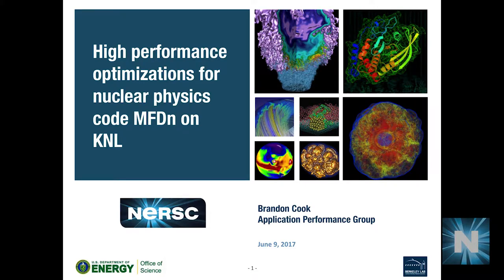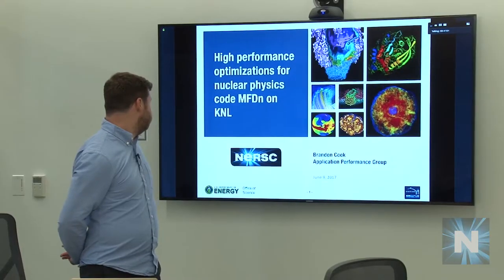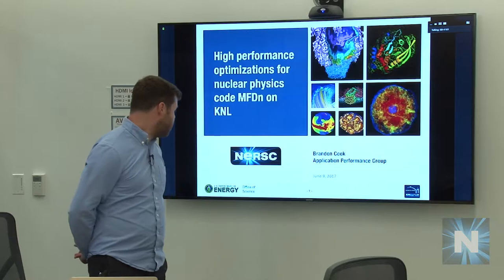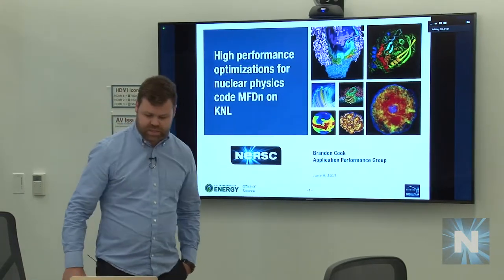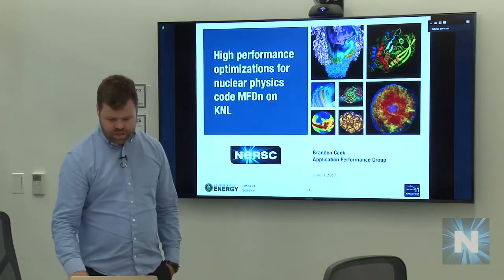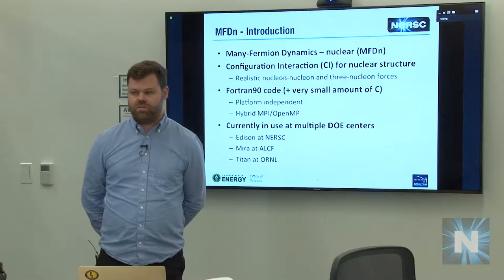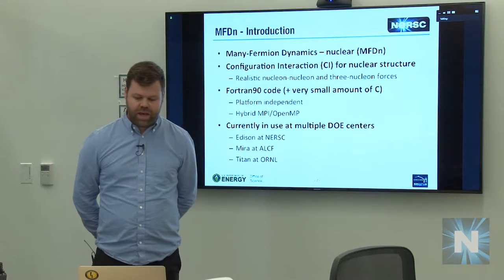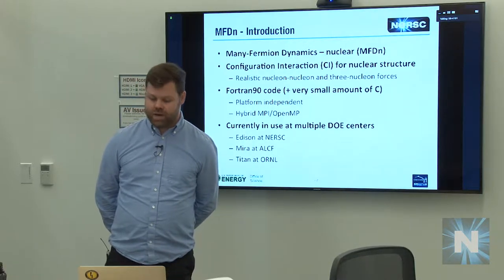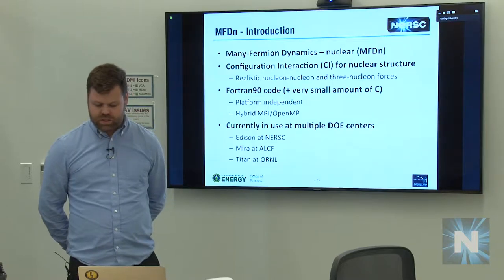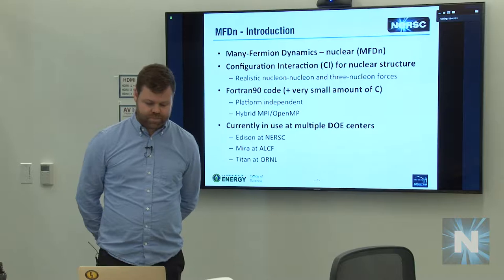The last case study for KNL is an application called MFDN — a nuclear structure theory code and many-body configuration interaction solver. The code is Fortran 90 with a very small amount of C kernels that may or may not be used. Otherwise it's totally self-contained with its own custom eigensolvers, and the only external dependencies are BLAS and LAPACK. It's an application in use at a number of DOE centers, so it's quite portable.